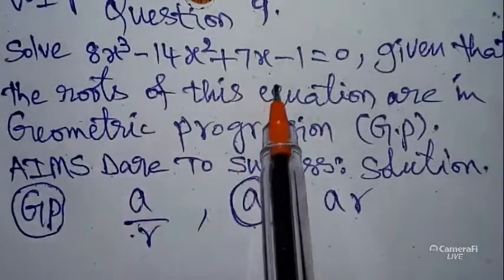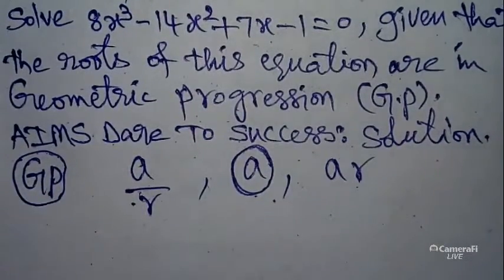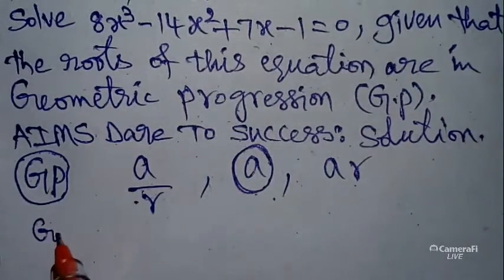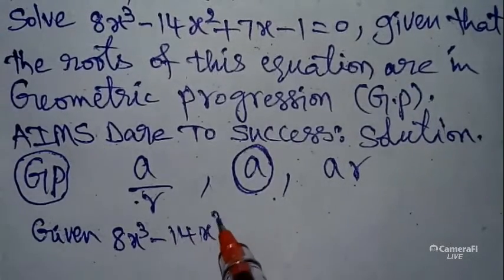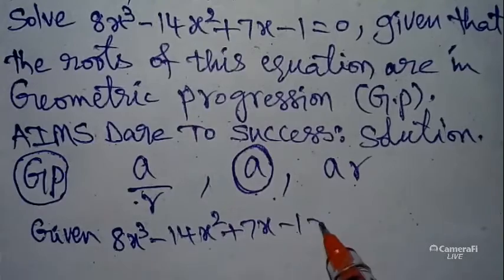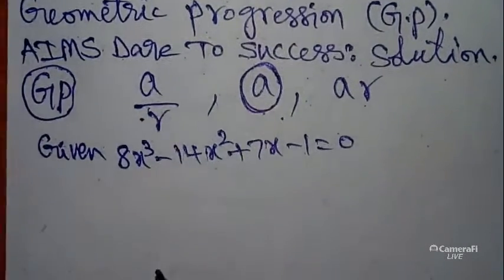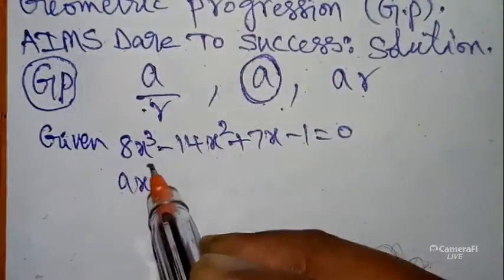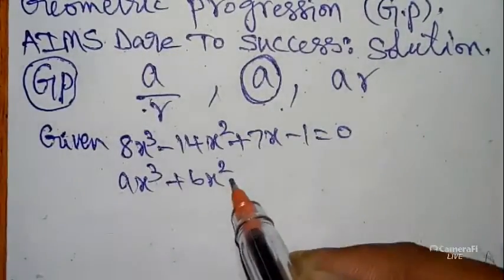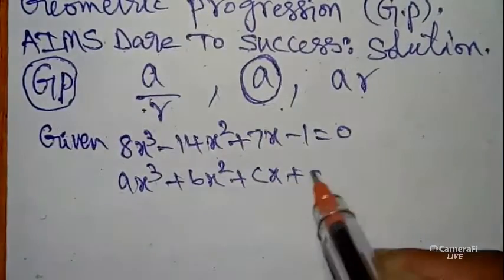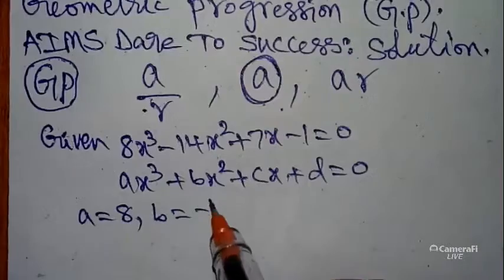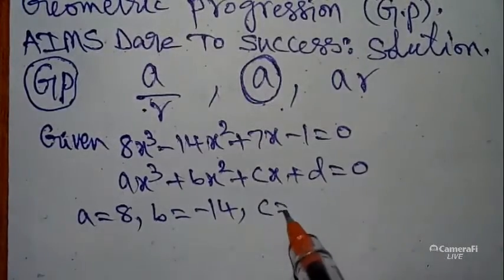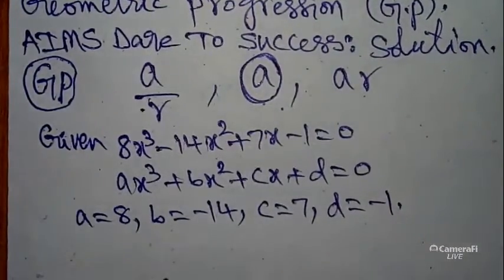The given equation is 8x³ minus 14x² plus 7x minus 1 equals 0. This is in the form Ax³ + Bx² + Cx + D = 0. Here A equals 8, B equals minus 14, C equals 7, and D equals minus 1.